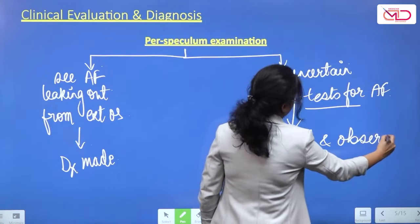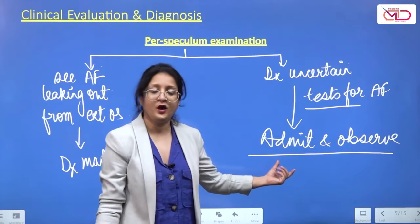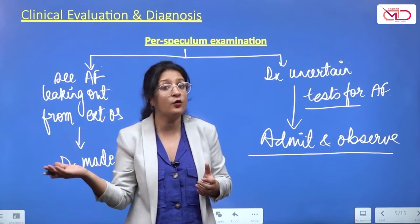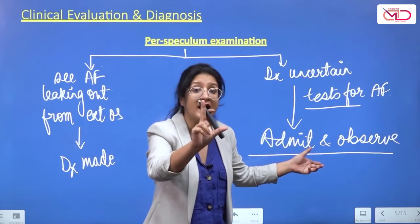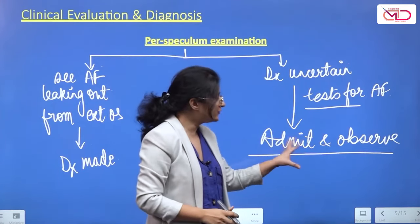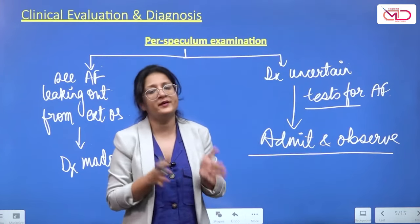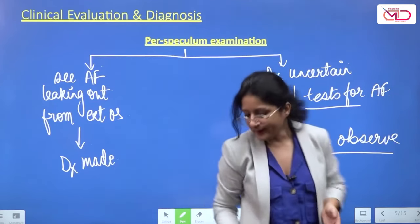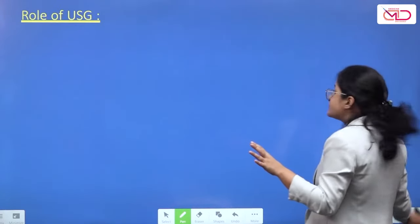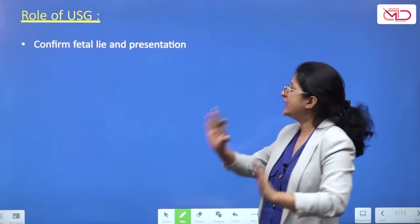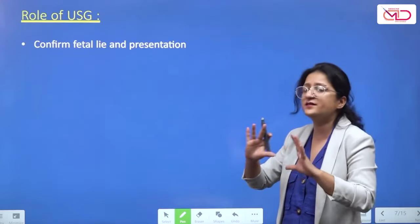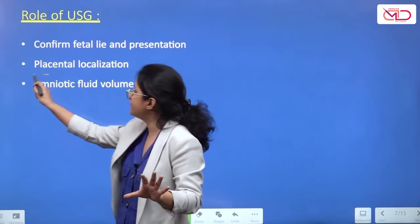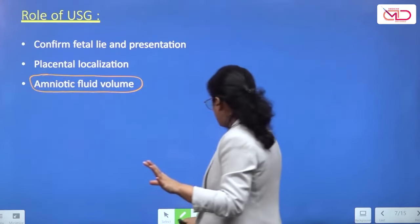If tests are unavailable and the diagnosis is uncertain, admit and observe. Give the patient a sterile perineal pad and periodically check if it is becoming wet. An important additional investigation is ultrasound — to see whether any amniotic fluid remains inside. Ultrasonography also confirms fetal lie and presentation, fetal wellbeing, and placental localization.